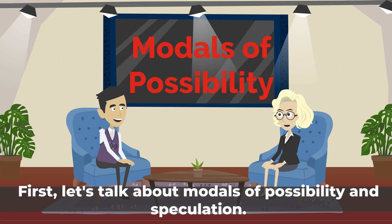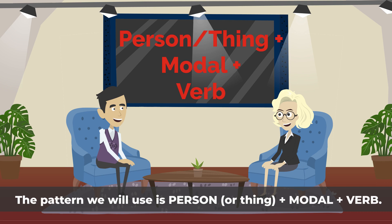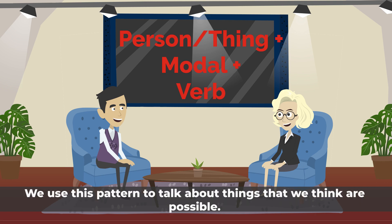First, let's talk about modals of possibility and speculation. The vocabulary that we will focus on will be could, might, and may. The pattern we will use is: person plus modal plus verb. We use this pattern to talk about things that we think are possible.